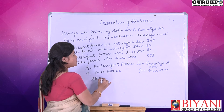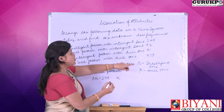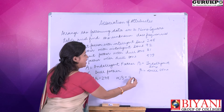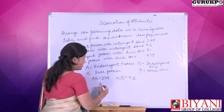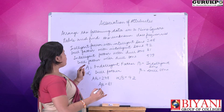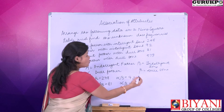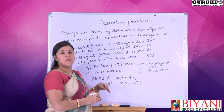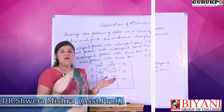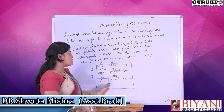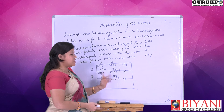Now we will write the abbreviations. Intelligent father is A and intelligent son is B, so AB equals 248. Next, dull father is alpha and intelligent son is B, so alpha B equals 92. Intelligent father is A and dull son is beta, so A beta equals 81. Dull father is alpha and dull son is beta, so alpha beta equals 579. These are the four combinations given to us, which we will now place in the 9-square table.